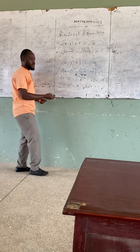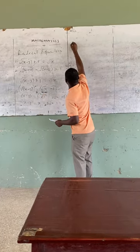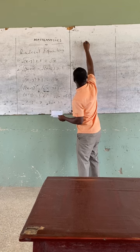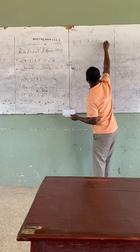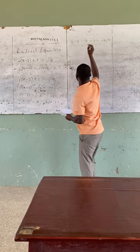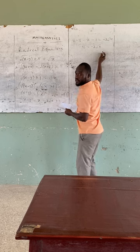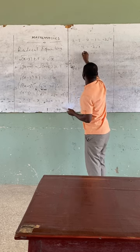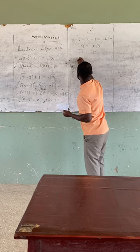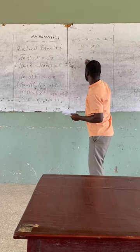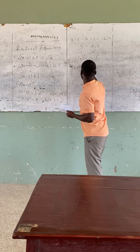Because we still have a radical, we isolate it again, keeping it on one side and moving all other terms to the other side. So x minus 3, minus x, minus 1 is equal to minus 2 root x. This gives us minus 4 is equal to minus 2 root x. Dividing both sides by minus 2, we get square root of x is equal to 2. Squaring both sides again to remove the square root gives us x is equal to 4.